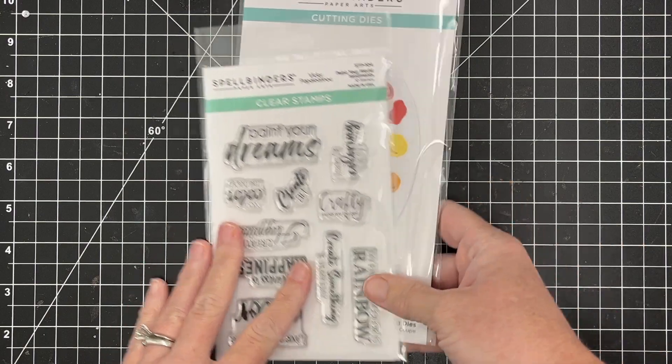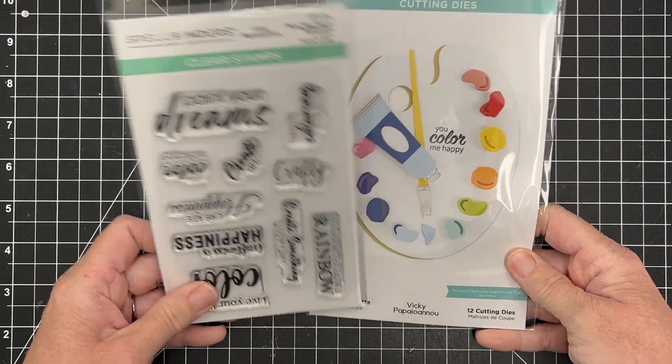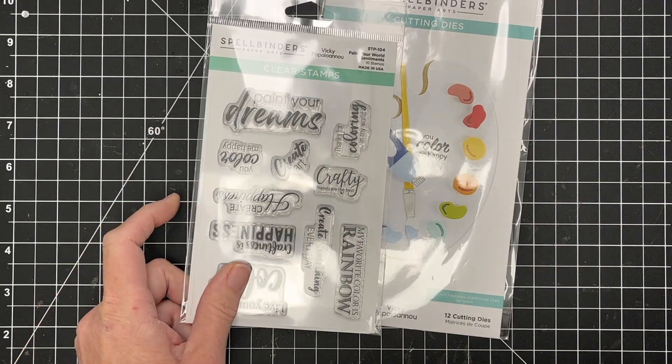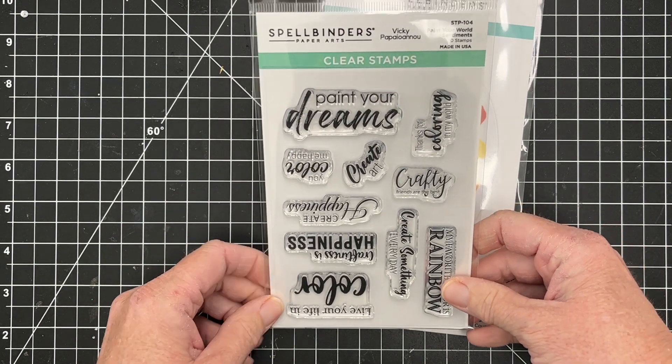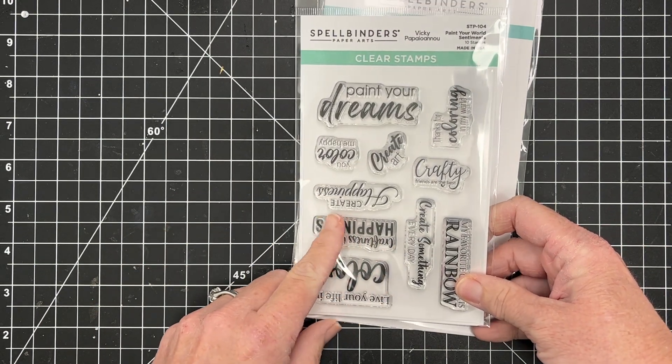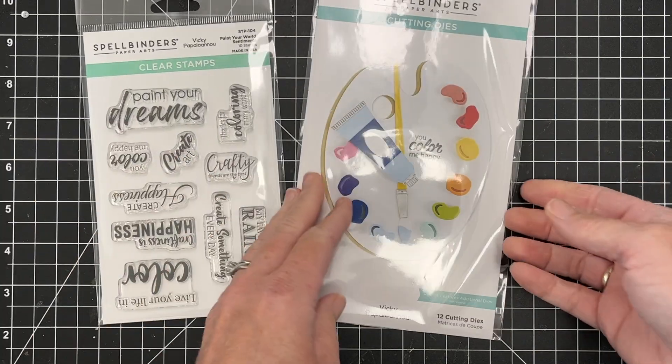Hey there, this is Katherine Cartwright. Welcome to the Scrapbook Pal YouTube channel. Be sure to take a second to subscribe and hit the like button. You don't want to miss any content over here. I'm going to be working with the Paint Your World stamp set and this Painter's Palette, both from Spellbinders, in this video today.